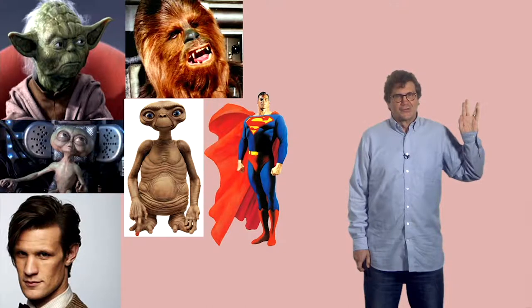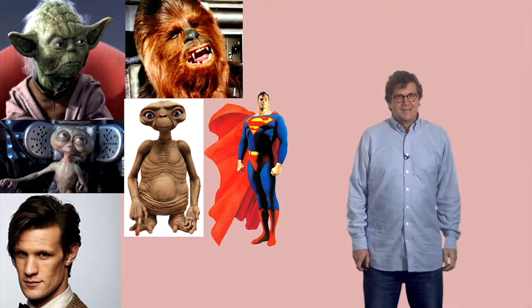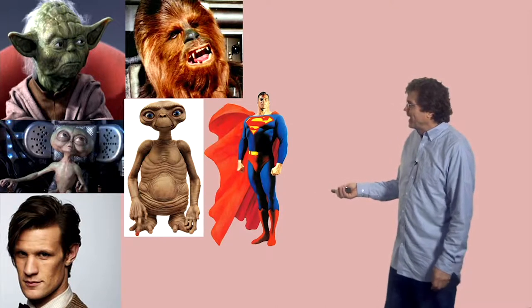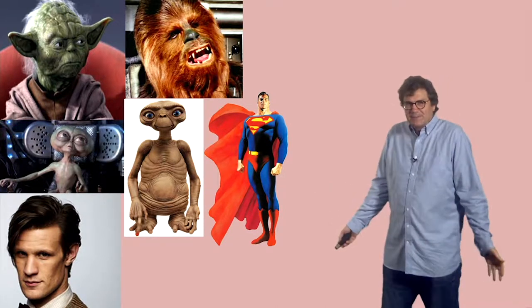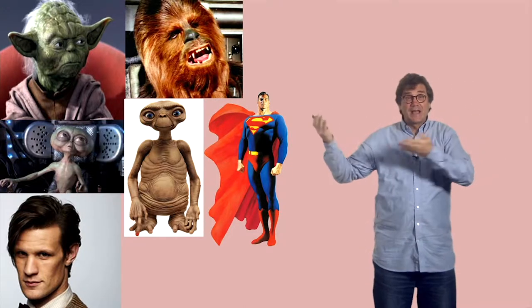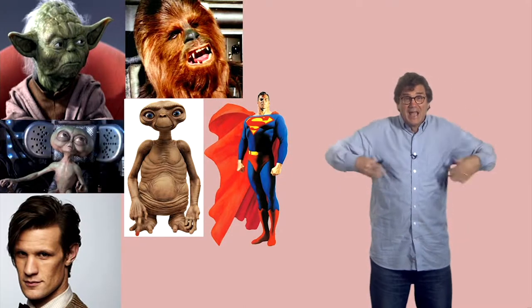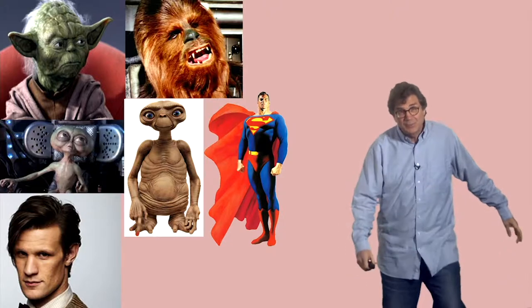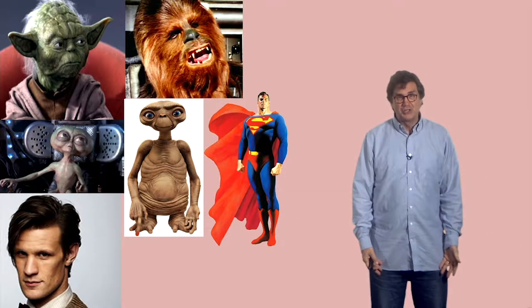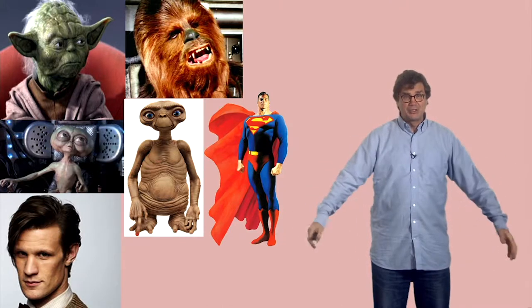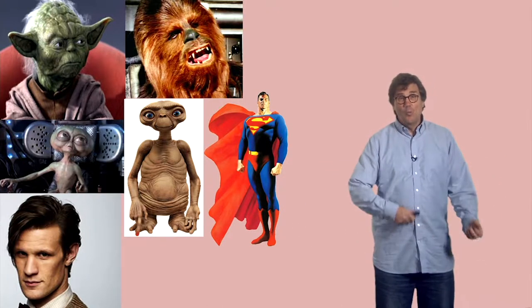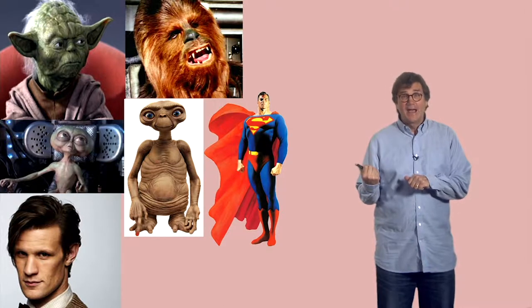Greetings, Earthlings. It's easy to assume that aliens have hair, and that's because we humans have hair. And we assume that they have mammary glands — we have mammary glands. And we have arms. And we have legs. I'm standing here on legs thanks to these appendages. Where did these guys come from? And why do we assume that aliens have them too?